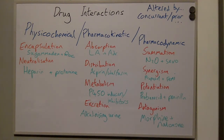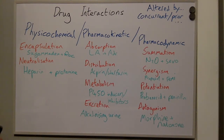We then have pharmacokinetic drug interactions. An example of absorption would be giving adrenaline alongside local anaesthetics to prolong its duration of action. For distribution, when we give aspirin alongside warfarin, aspirin displaces the warfarin from the protein molecules, therefore increasing the availability of warfarin to take its effect.